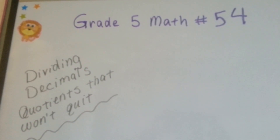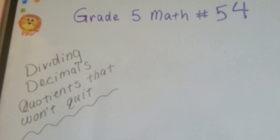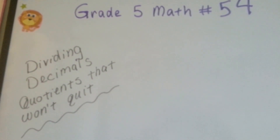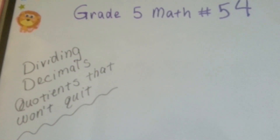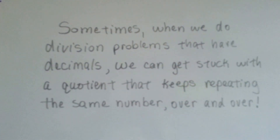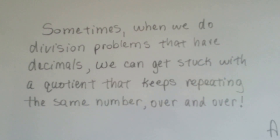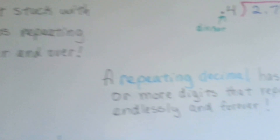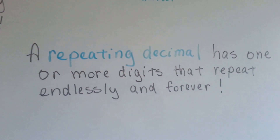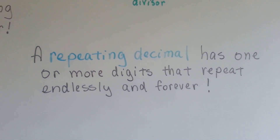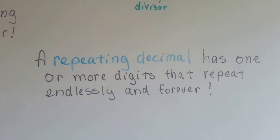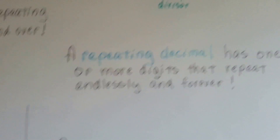Grade 5 math number 54: dividing decimals and quotients that won't quit. Sometimes when we do division problems with decimals, we can get stuck with a quotient that keeps repeating the same number over and over. A repeating decimal has one or more digits that repeat endlessly — endlessly forever — and will drive you crazy.